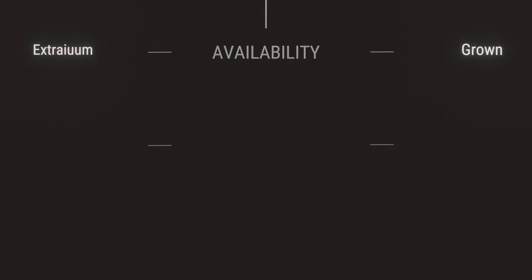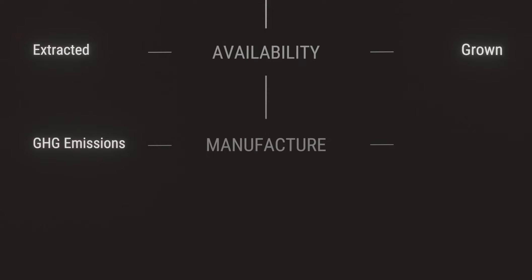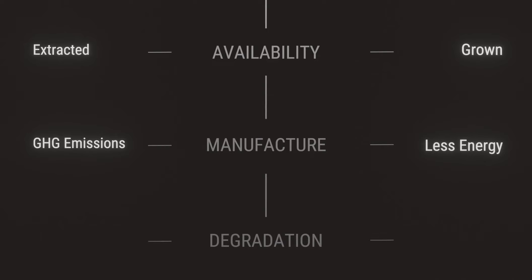Regarding availability of materials, bioplastics materials need to be grown, while conventional plastic is simply extracted but is not renewable. For manufacturing, greenhouse gas emissions are released during conventional plastic manufacture, but not in bioplastics. However, bioplastics do use more energy for their manufacture.